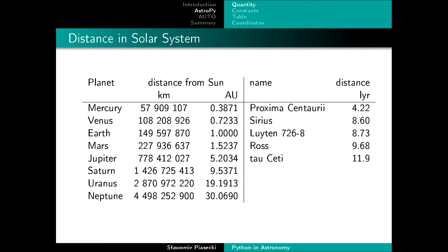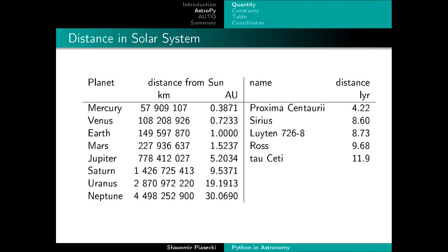To show how simple astronomical units are: on the left, planets in the solar system — Earth is 1 AU, and it's much easier to say Neptune is 30 AU from the Sun than 4 billion kilometers. On the right, the nearest stars in light years. One light year is 63,000 AU, so for Proxima Centauri we need to travel about 4 years at the speed of light to get there.